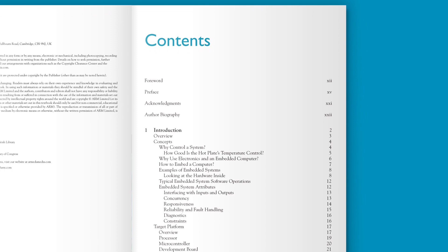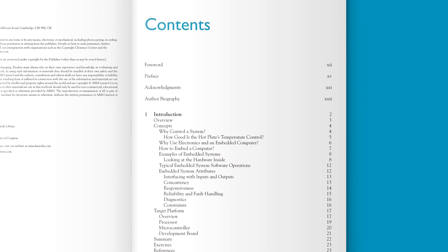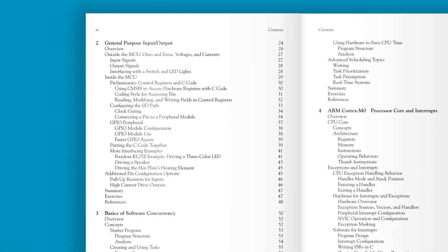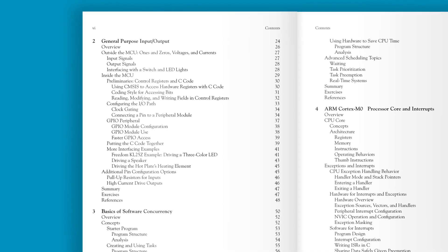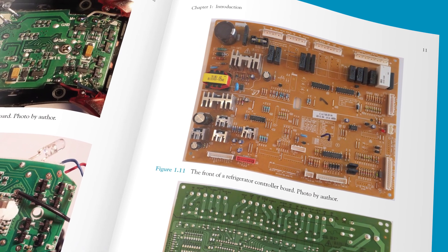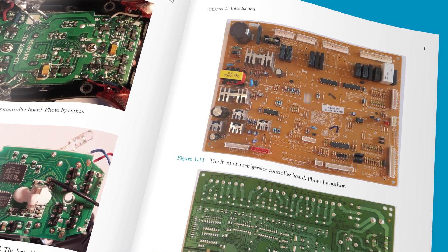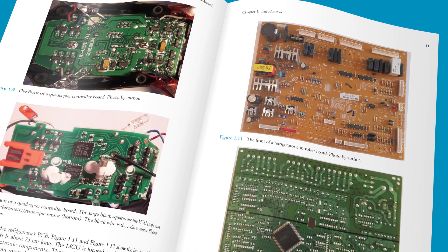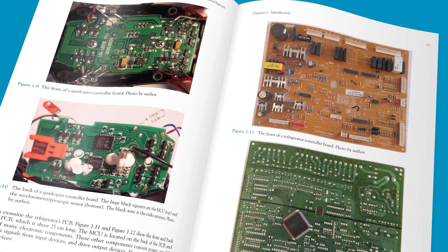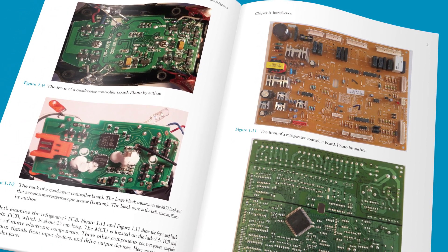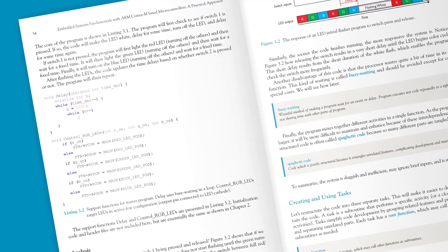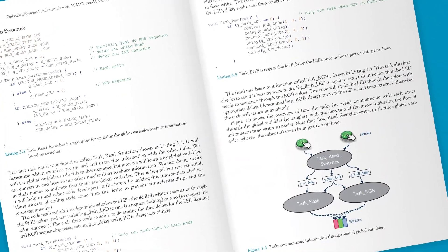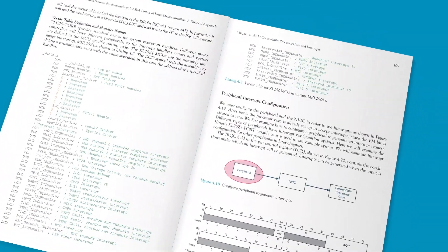The concurrent operation of the CPU and peripherals is highlighted throughout as critical to creating cost-effective embedded systems. This book gives an early introduction to practical multitasking on the CPU, with the goals of improving responsiveness and software modularity while reducing CPU overhead. The interplay of interrupts, peripherals, and schedulers is examined.